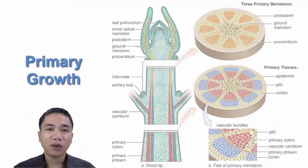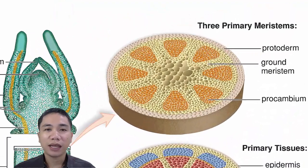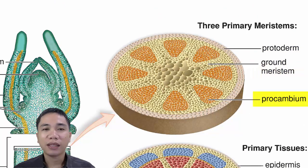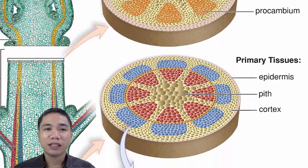This is called primary growth, leading to the formation of primary meristems — namely the protoderm, the ground meristem, and the procambium. You can see these primary tissues just beneath the tips.